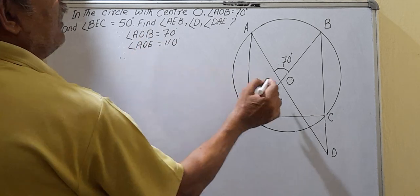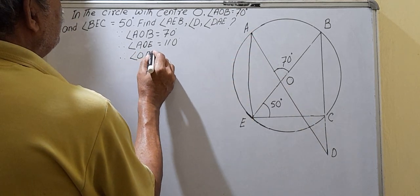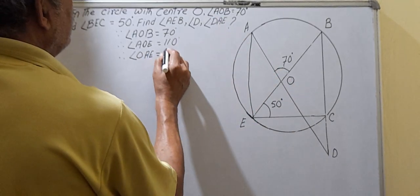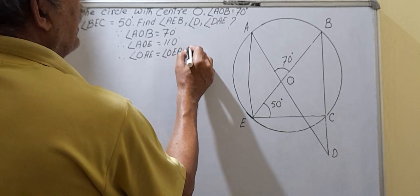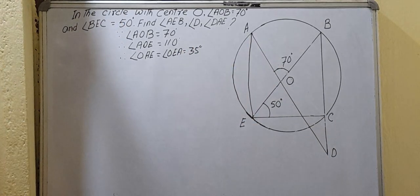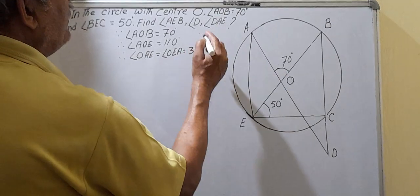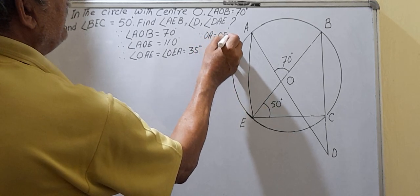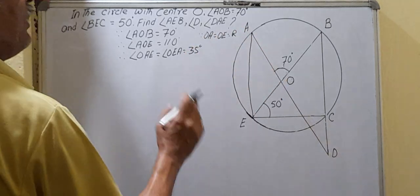Therefore angle OAE = angle OEA = 35 degrees. This is because OA = OE = radius, so triangle OAE is an isosceles triangle, and the sum of interior angles of a triangle is 180 degrees.